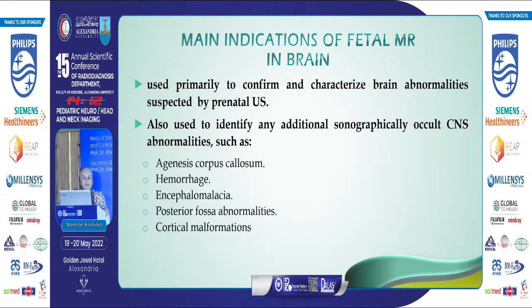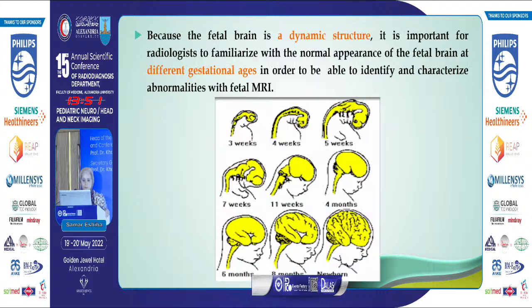The main indications of fetal MRI for brain anomalies are either to confirm brain abnormalities suspected by prenatal ultrasound or to identify additional sonographically occult CNS abnormalities, including agenesis of the corpus callosum, posterior fossa abnormalities, or cortical malformation. The fetal brain is a dynamic structure, so it is important for each radiologist to be familiar with the normal appearance of the fetal brain at different gestational ages in order to identify and characterize abnormalities on fetal MRI.